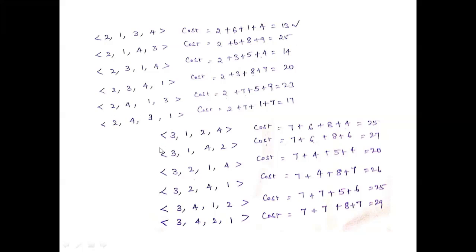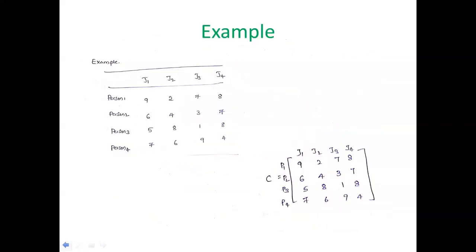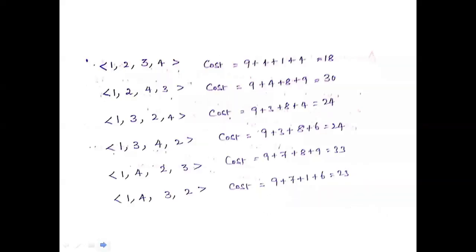For the third possibility, we fix the first person's job as job 3. We assign the third job to person 1, and change the positions for all remaining persons. For the combination [3, 2, 1, 4] — person 1 gets job 3, person 2 gets job 2, person 3 gets job 1, person 4 gets job 4 — the cost is 7 + 4 + 5 + 4 = 20.